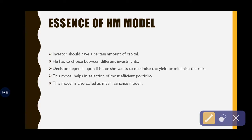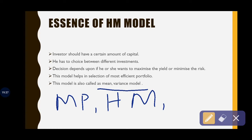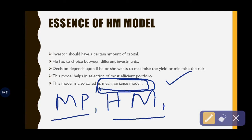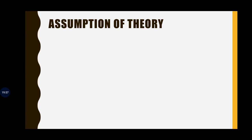This model has three names: Modern Portfolio Theory, Harry Markowitz model, and mean-variance model. So don't get confused in an exam if they ask it by multiple names — this is also called Modern Portfolio Theory, Harry Markowitz model, and mean-variance model.